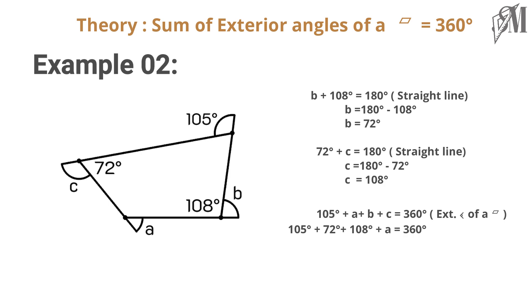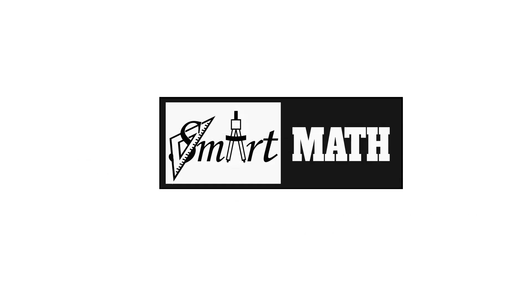...a plus b plus c is equal to 360. We can substitute and we can obtain a is equal to 75 degrees. Hope I made myself clear about the angles of the quadrilateral. See you with another Smart Math tape. Until then, goodbye.